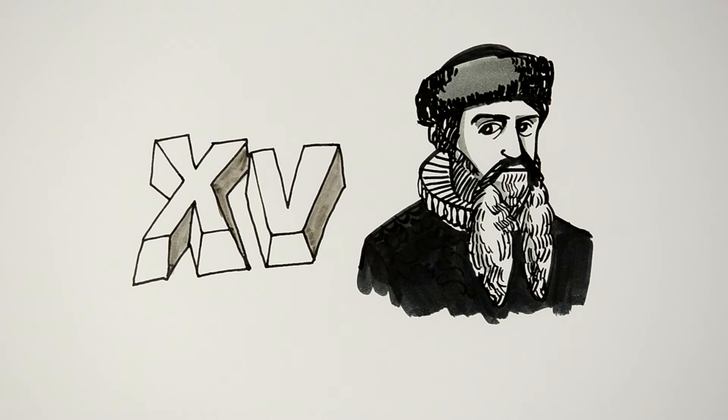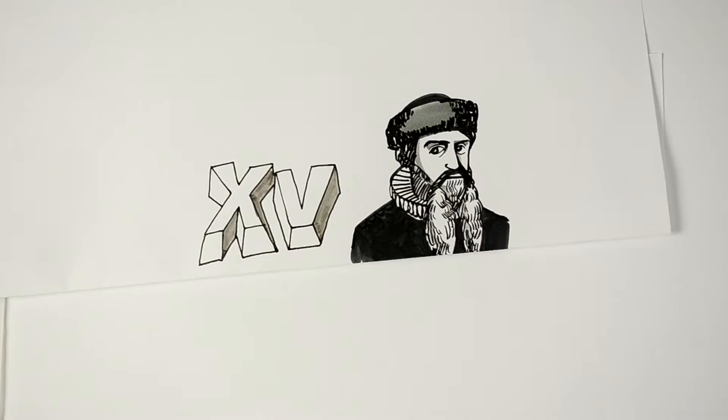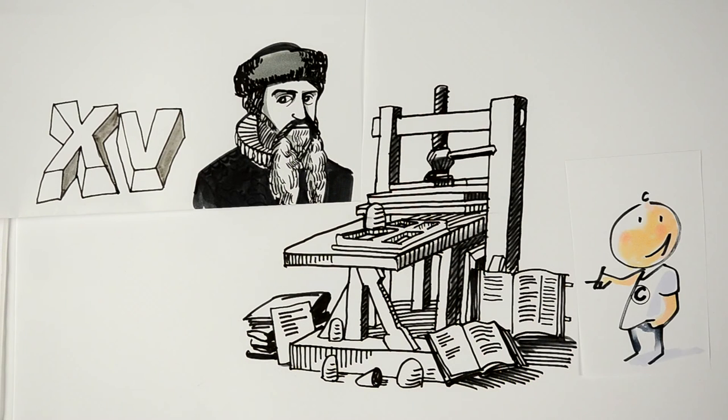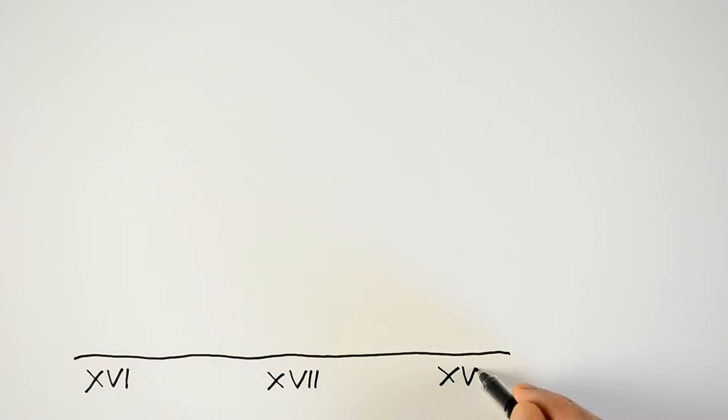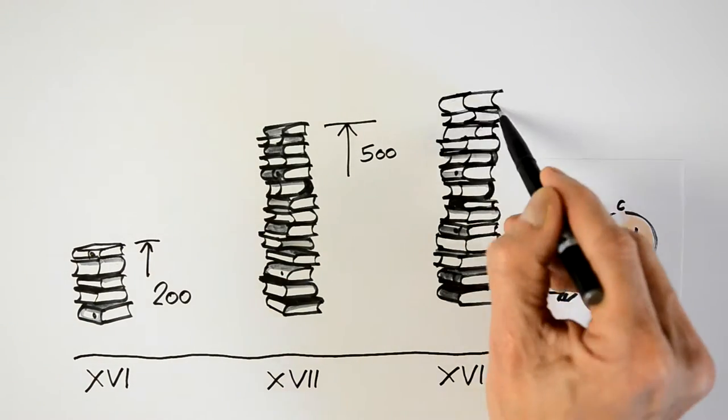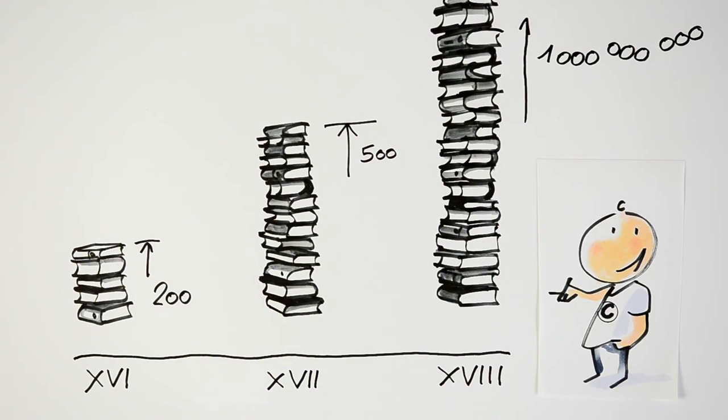Now, this 15th century chap was called Gutenberg, and he invented a machine that was sort of an electricity-free photocopier, and that helped to make loads of books for everyone. It was a great success. 200 million, 500 million, a billion books in the 18th century.